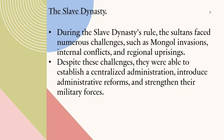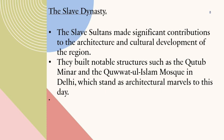The slave sultans made significant contributions to the architecture and cultural development of the region. They built notable structures such as the Qutub Minar and the Quwwat-ul-Islam Mosque in Delhi, which stand as architectural marvels to this day.